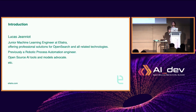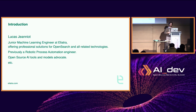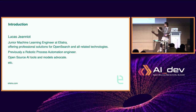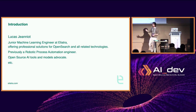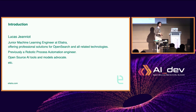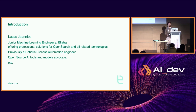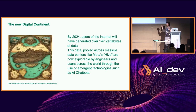A little bit about me. My name is Lucas, I am a junior machine learning engineer at Eliatra. I was previously a robotic process automation engineer for a finance company — we took human processes, things a finance person did 100 times a day, and automated them using tools like UiPath or Blue Prism. That really gave me my start into machine learning. I love open source AI tools and models. I'm a big advocate for it, and it was great to meet some of the folks from Hugging Face today.